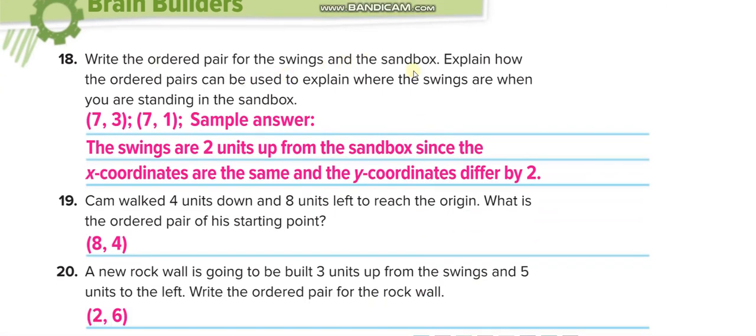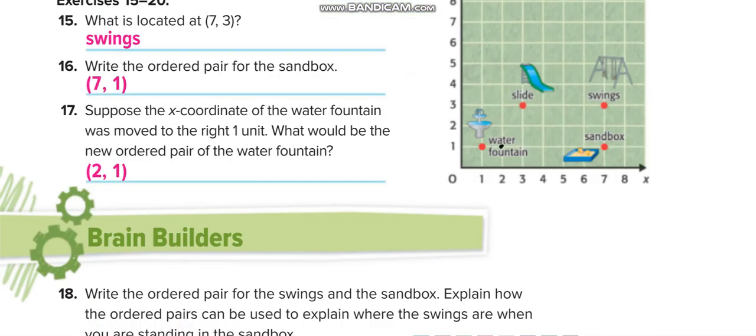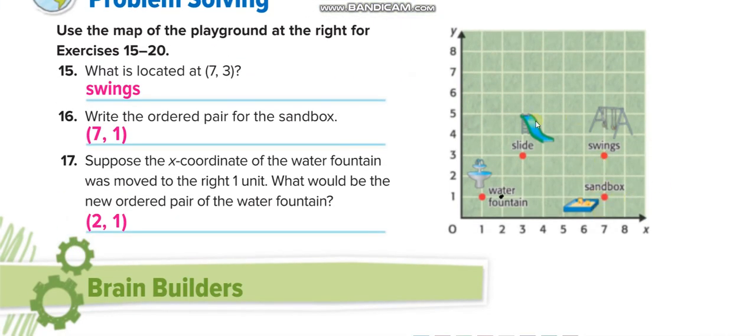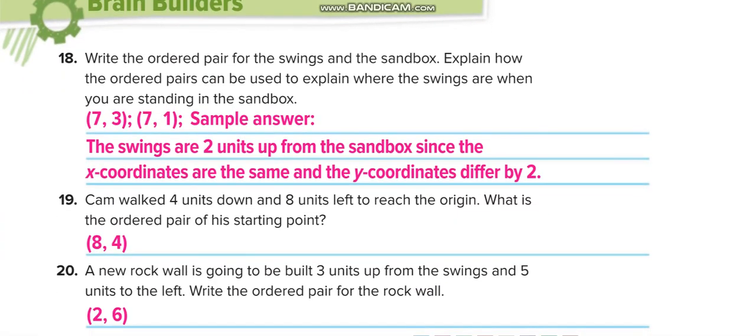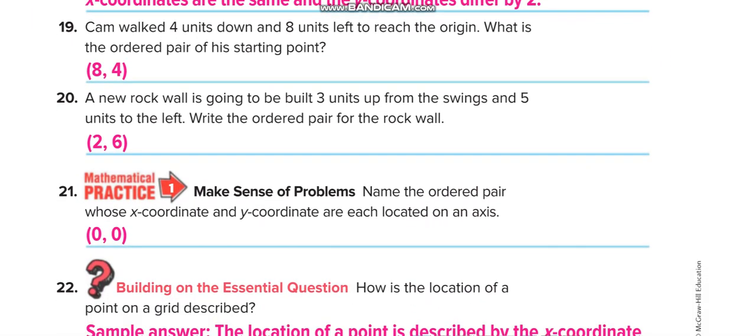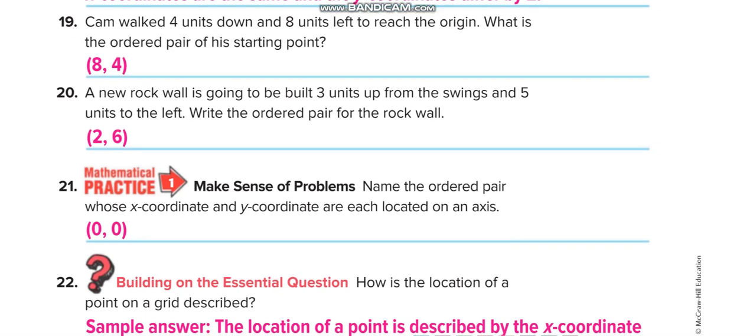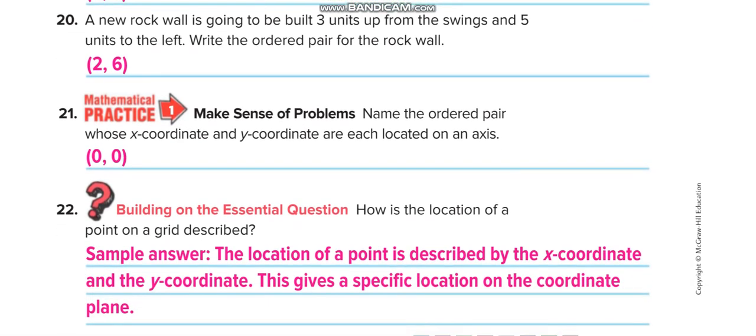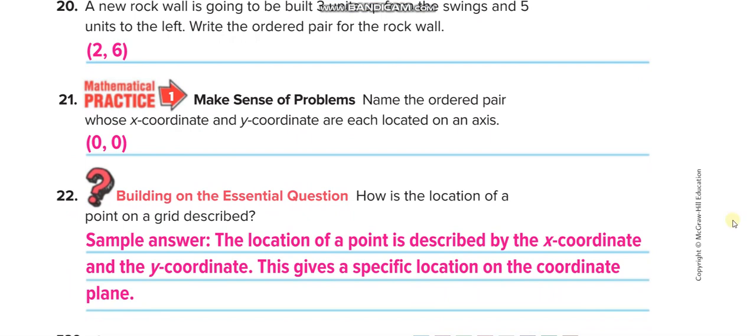Write the ordered pair for the swings and the sandbox. Swings: (7, 3), sandbox: (7, 1). Explain how the ordered pairs can be used. This is the explanation, and these are the next three questions and the fourth one.